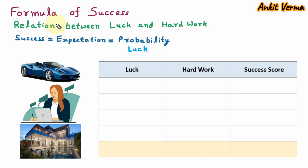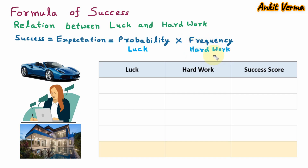We don't have control on our luck — this is our destiny. In the formula of success, probability is multiplied with frequency. Frequency is called hard work: the actions we perform to achieve something. This is in our control. The hard work can be low or high; it depends on what we want to do.